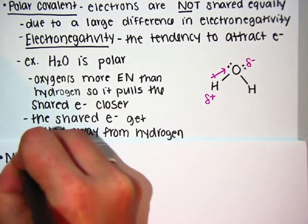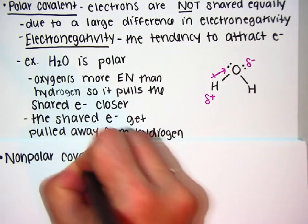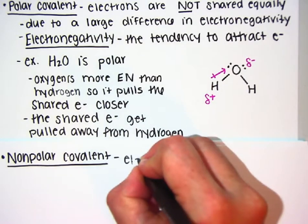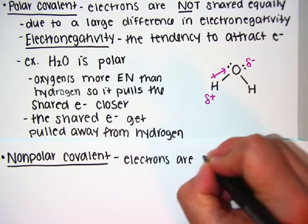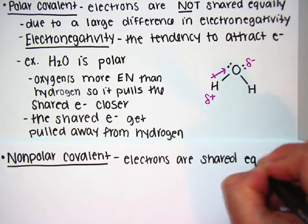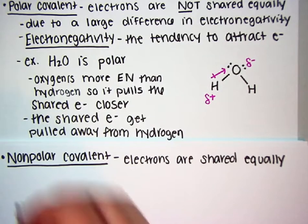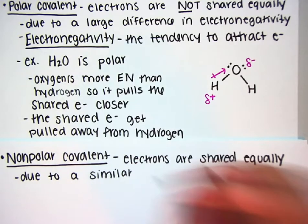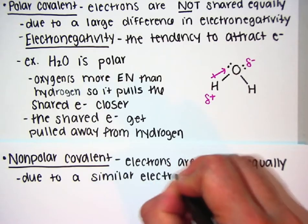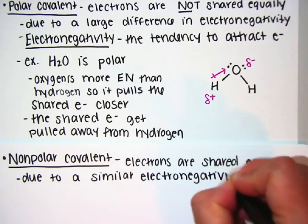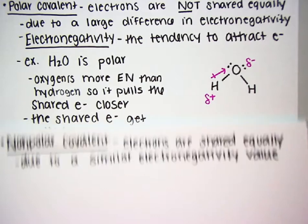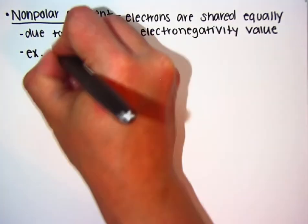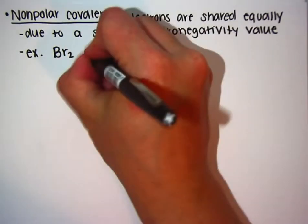We can also have a nonpolar covalent compound. In a nonpolar covalent compound, the electrons are shared equally, due to a similar electronegativity value. We looked at water as polar. An example of a nonpolar compound would be diatomic bromine, Br₂, and this is going to be nonpolar.